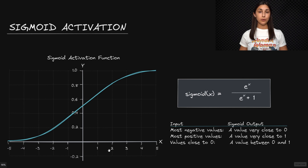For most positive values passed as input, we are going to be getting as output a value that is very close to one. Whereas for most negative values, we will get an output from sigmoid that is very close to zero.